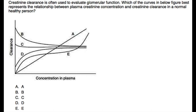This question pertains to the graph provided. Creatinine clearance is often used to evaluate renal function. Which of the curves in the figure below best represents the relationship between plasma creatinine concentration and creatinine clearance in a normal healthy person? The answer choices are labeled on the figure.